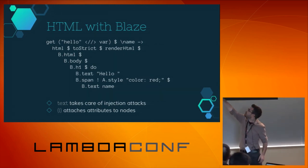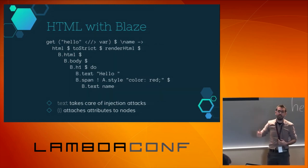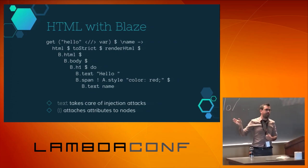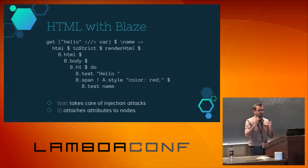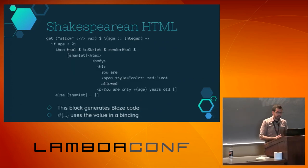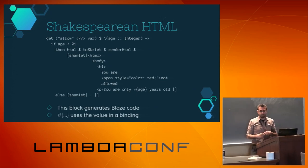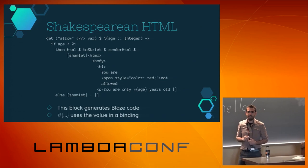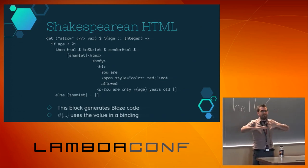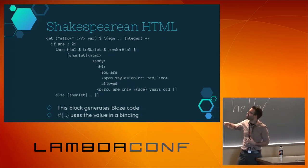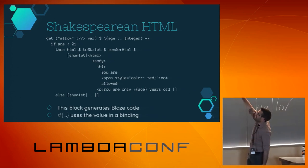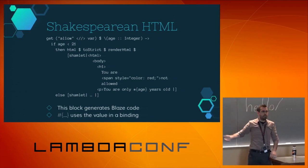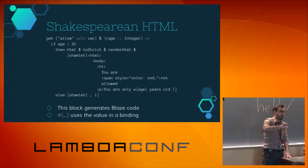Since this is Haskell code you can use your maps, folds, whatever to generate this code. The text function takes care of injection attacks — it ensures that whatever the user provides is given as safe HTML and not as a script. If you are more into writing HTML, instead you can use Shakespeare, which uses quasi-quoters — things which translate from syntax that looks like other languages into Haskell. Writing the Hamlet quasi-quoter is exactly the same thing as writing the previous Blaze code.